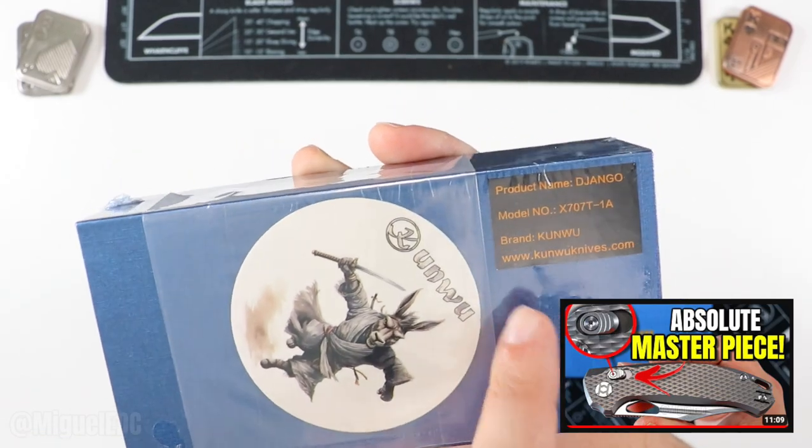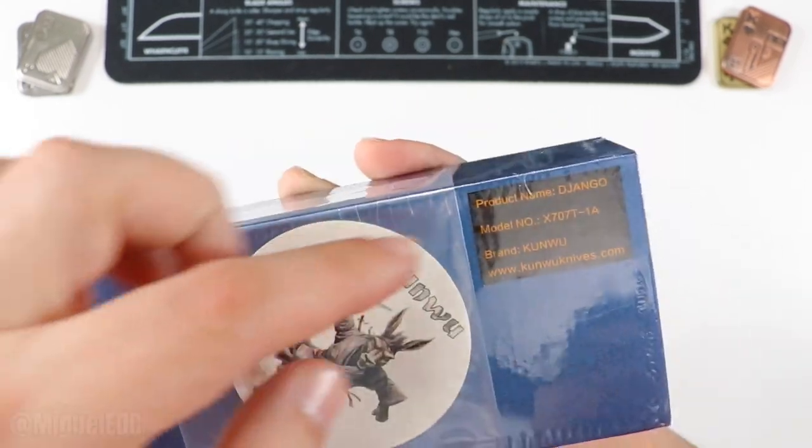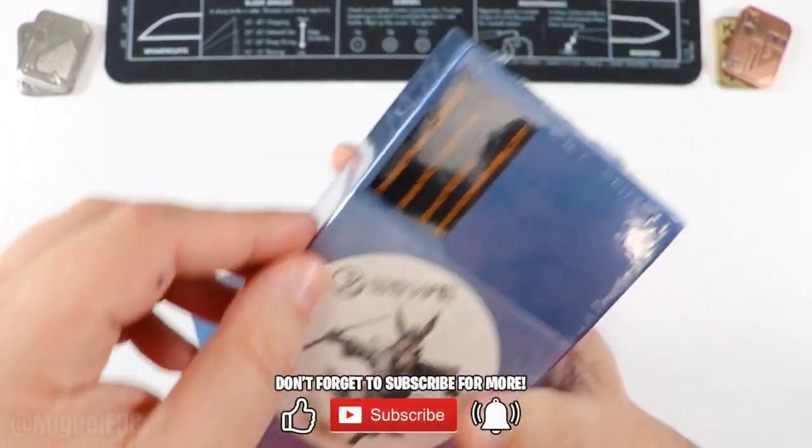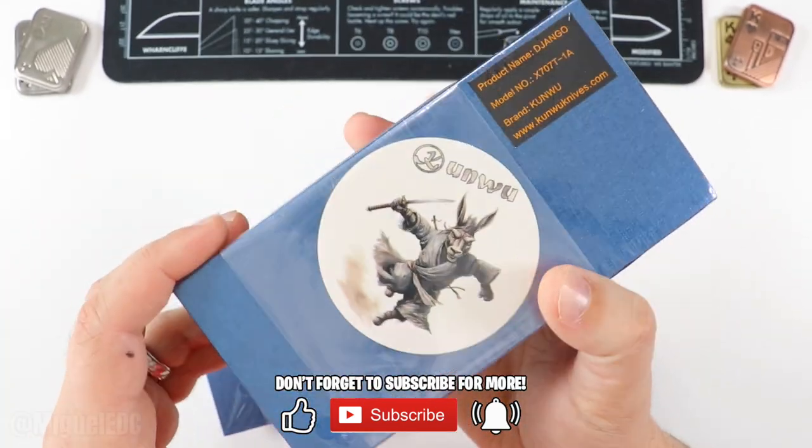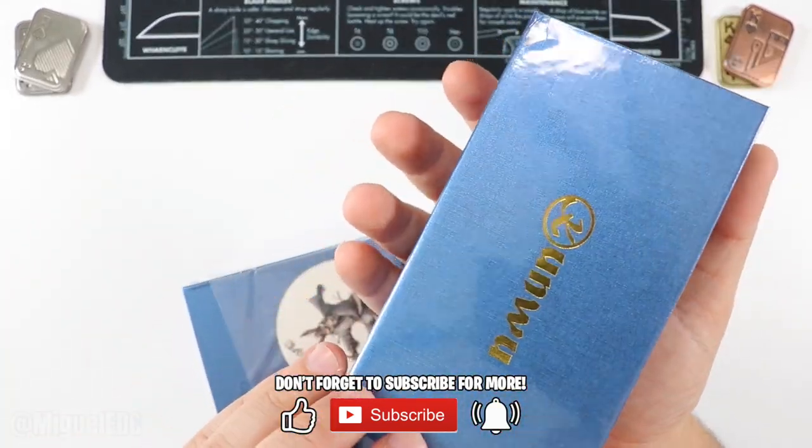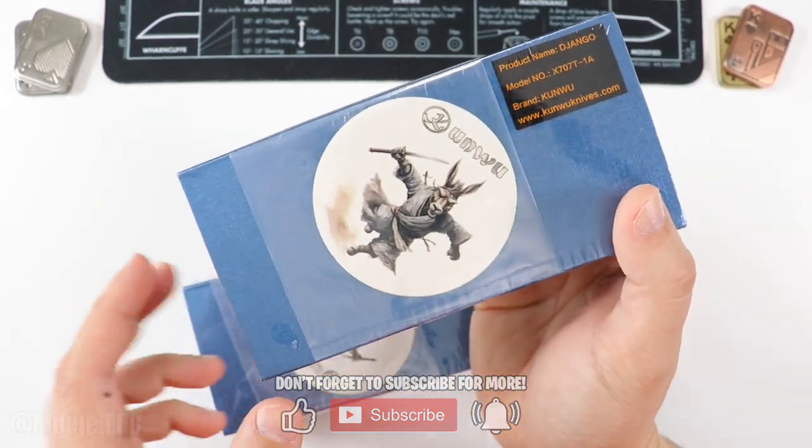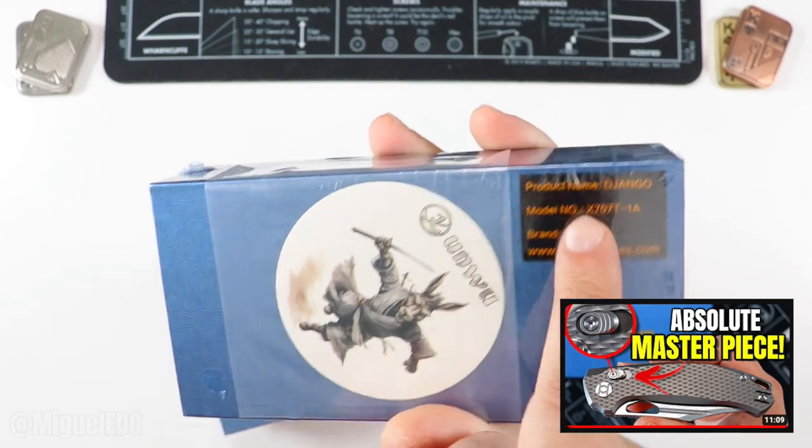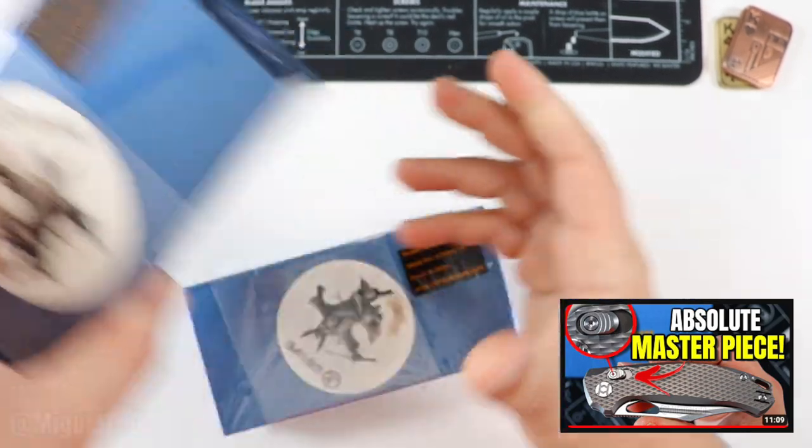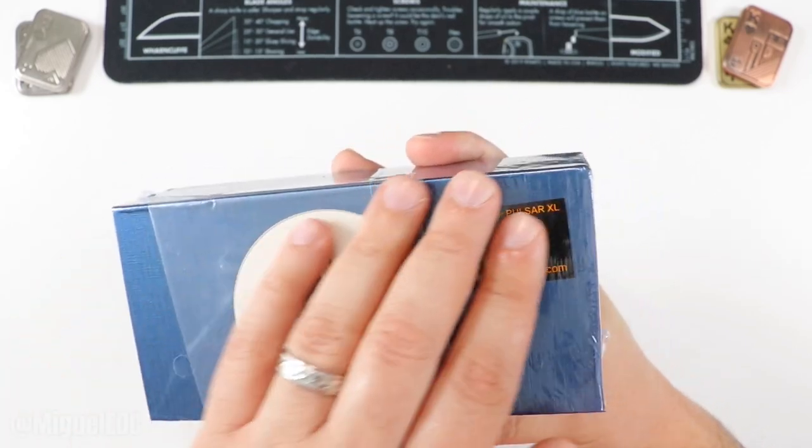Okay, so first things first guys, we have the Kumbu Django right. This one here you have already seen in the channel. I did an unboxing on this one. I borrowed this one from Lefty EDC. I am going to be doing a short like ASMR short with this one here very very soon. So subscribe to the channel if you aren't already so you can see the unboxing on this one in short format. But again, there is a long form unboxing video on the Django already so check that out in the channel.